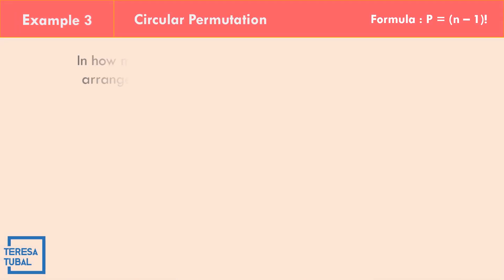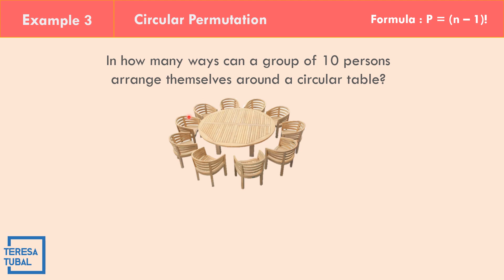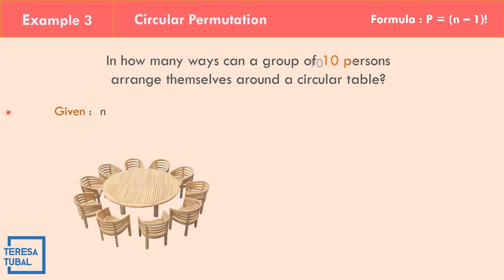In example number 3, in how many ways can a group of 10 persons arrange themselves around a circular table? As you can see, we have a circular table with 10 seats for 10 persons. The given is n equals 10, and we will find the number of permutations.